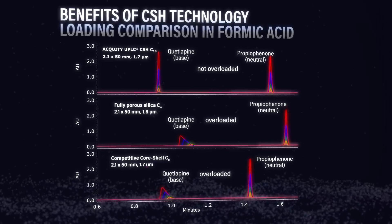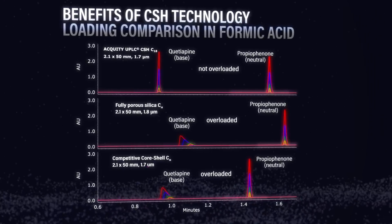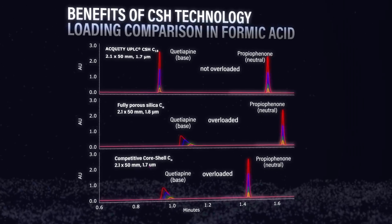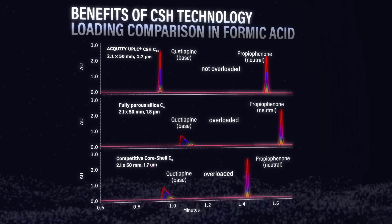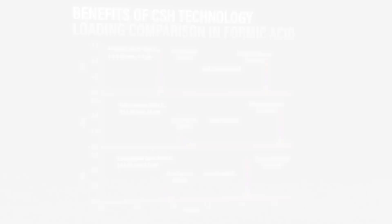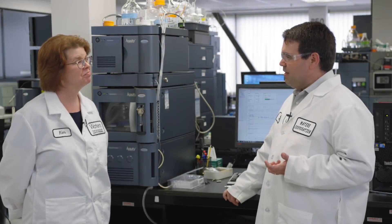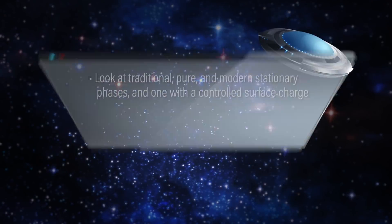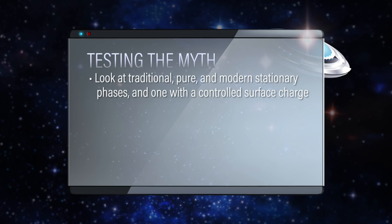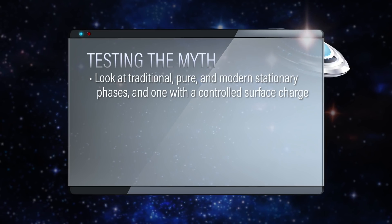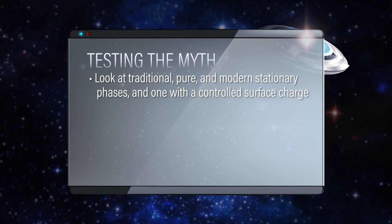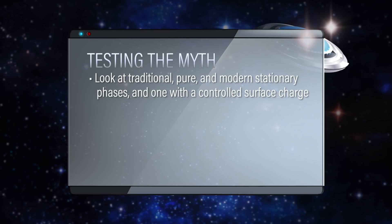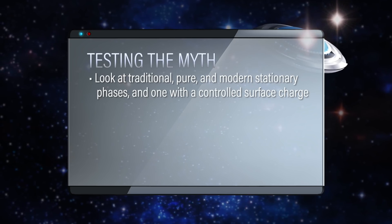That's much better for a neutral peak. This is something that's been known for a while with small molecules, and the same likely applies to basic peptides. So Kim, to test this myth, I think we need to look at a couple of different stationary phases — traditional, pure, modern stationary phases, and then one that may have a controlled surface charge on it.